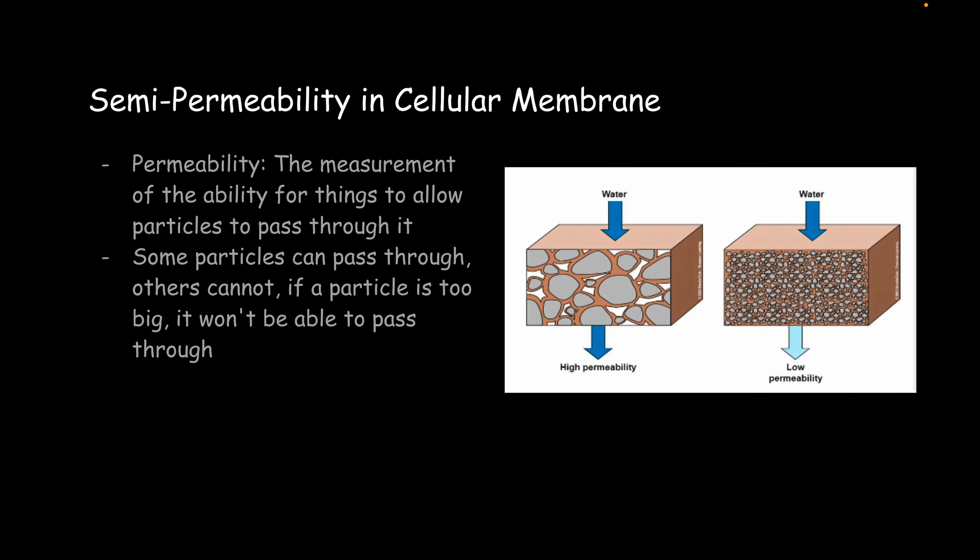So, semi-permeability in the cellular membrane. What is permeability? Well, it's a measurement of the ability for things to allow particles to pass through it. Some particles can pass through, others cannot. That means semi-permeable. Some things can pass through, others cannot.